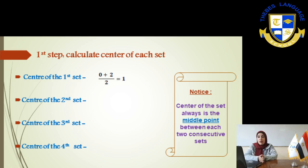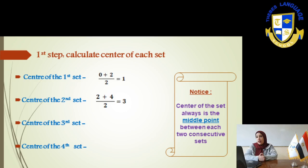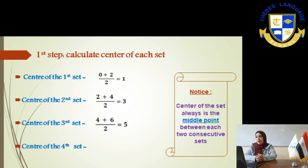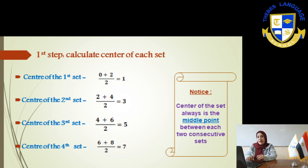So you will put the point on number 1. The center of the second set will be 2 plus 4 over 2. The answer will be 3. Third set, 4 plus 6 over 2, 10 divided by 2, the answer will be 5. And the center of the fourth set will be 6 plus 8 over 2. The answer will be 7.